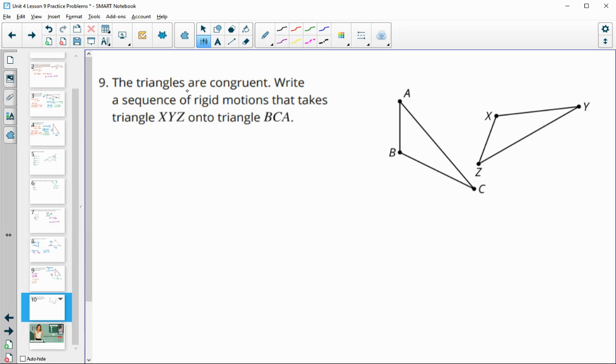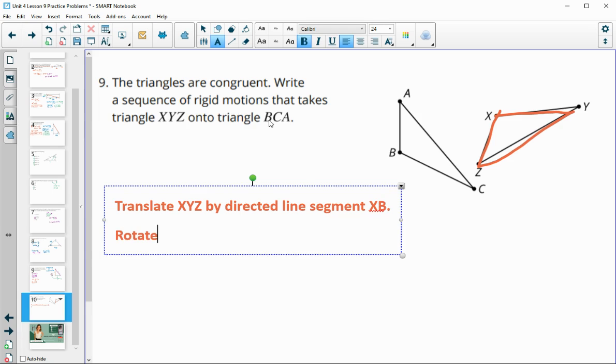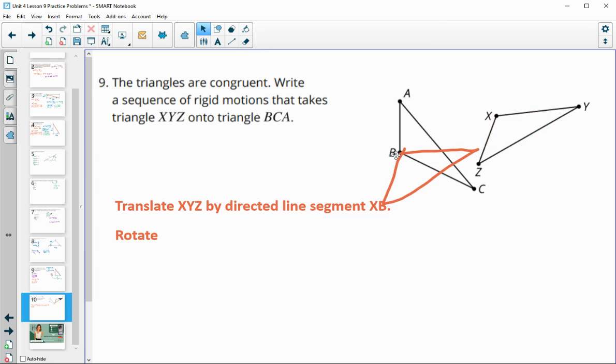In this last problem, number 9, it says that these triangles are congruent and it wants us to write a sequence of rigid motions that would take XYZ onto triangle ABC. I'm just going to type this out. These two triangles are not touching, so we're going to have to do a translation. So translate triangle XYZ by the directed line segment connecting any corresponding parts. I'm just going to start with the first letter, so by directed line segment X, and we're going to put X onto B. That's going to move X onto B.